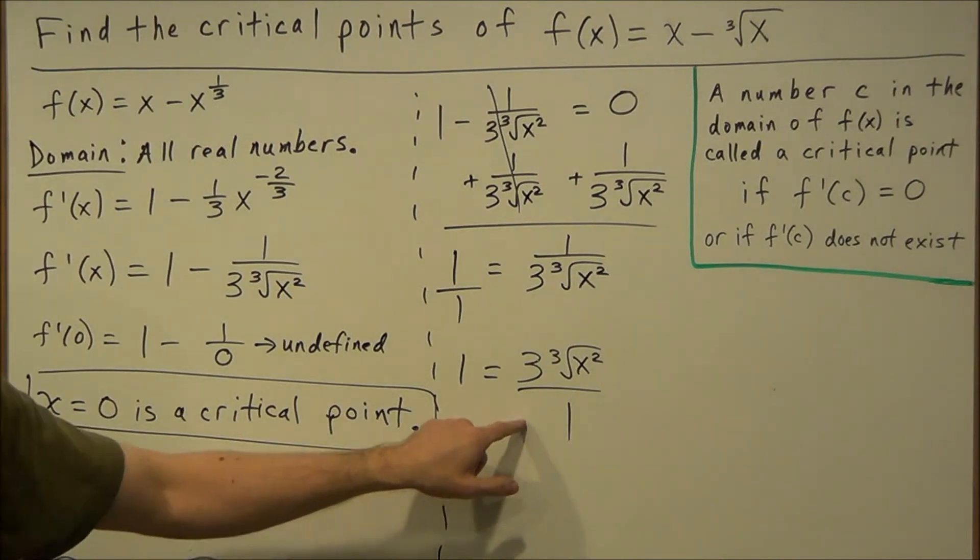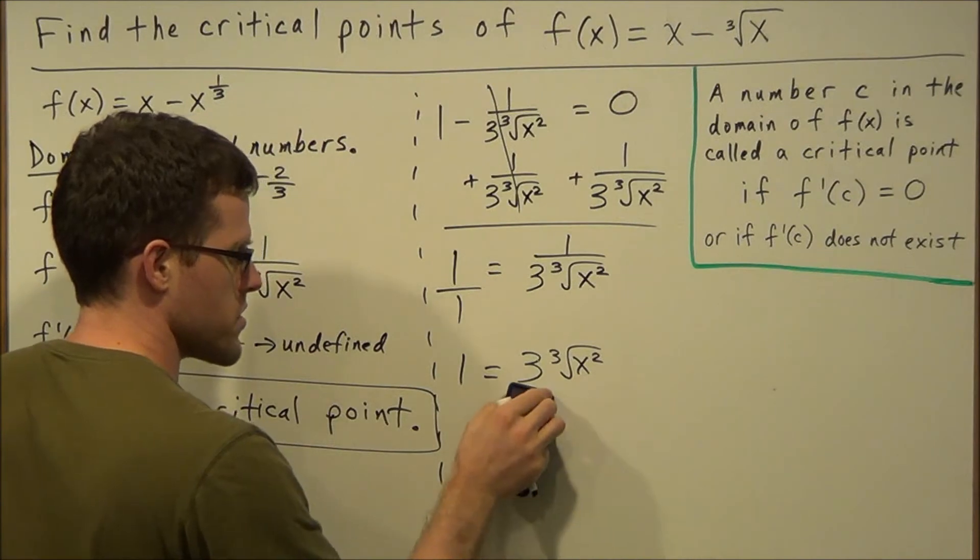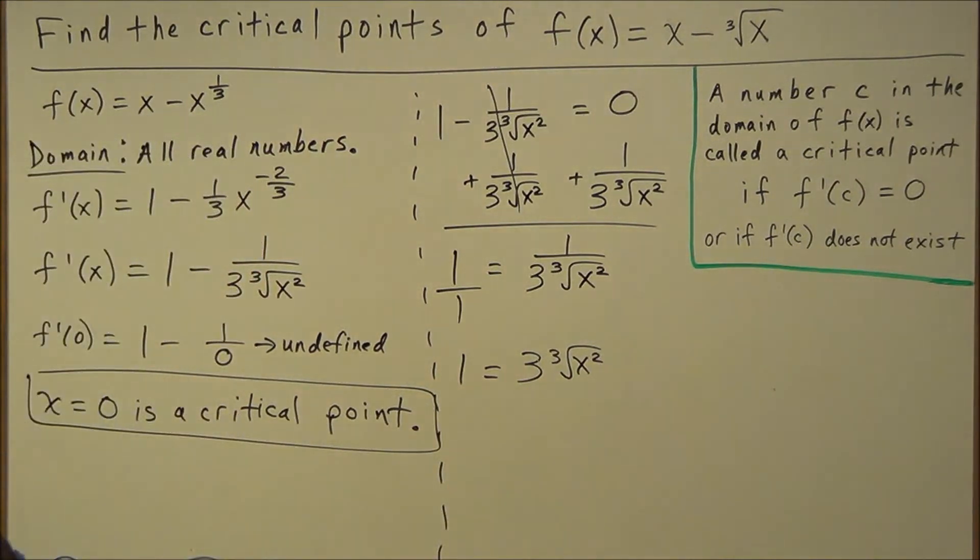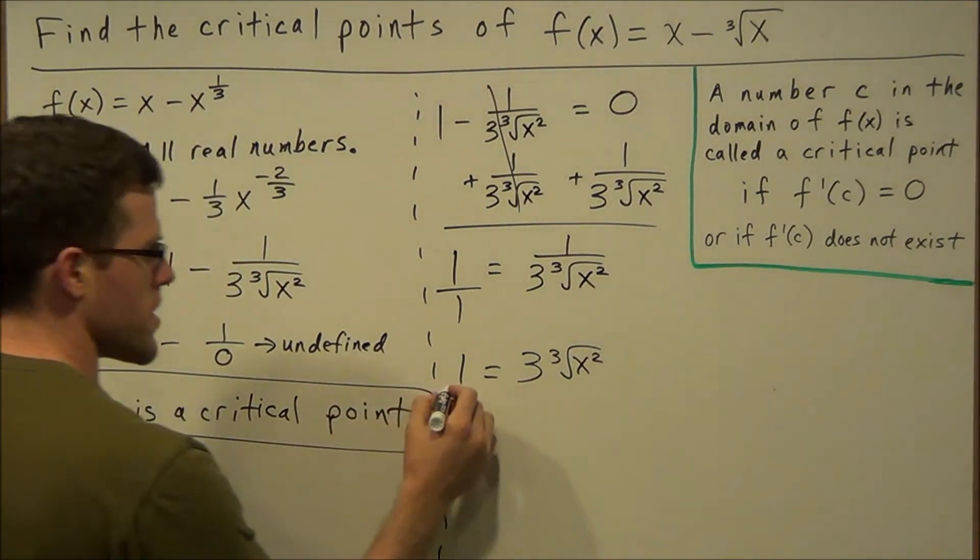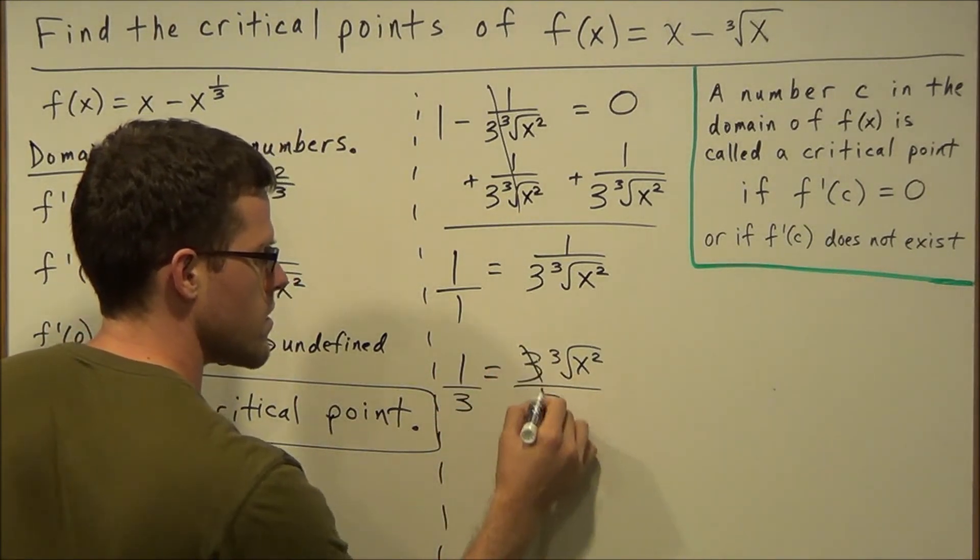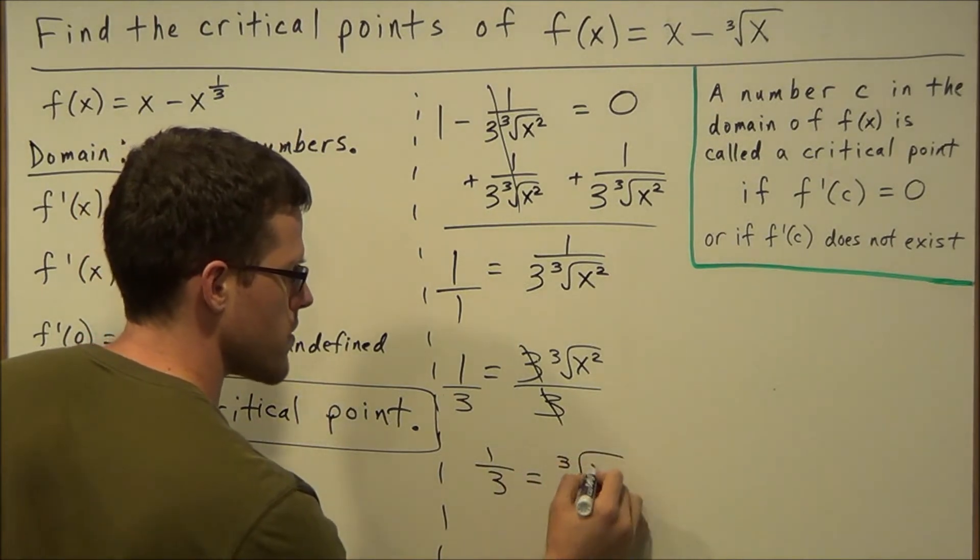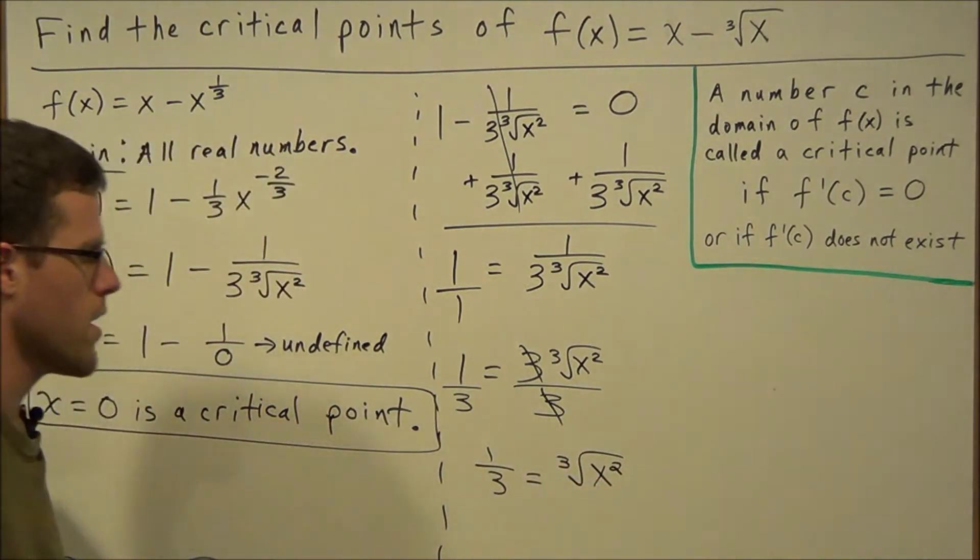Technically we could say that this is over 1. However, dividing by 1 won't have an effect on this numerator value, so we could just get rid of this. Next what we'll do is we'll divide both sides by 3.